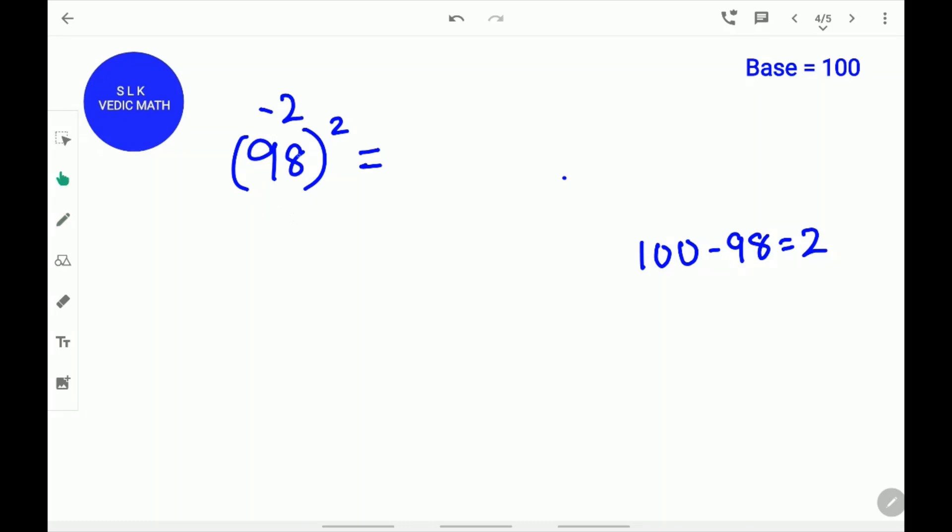Next, subtract this difference 2 from 98. 98 minus 2 is 96. Write 96 over here. Two more digits to go since there are two zeros in 100.